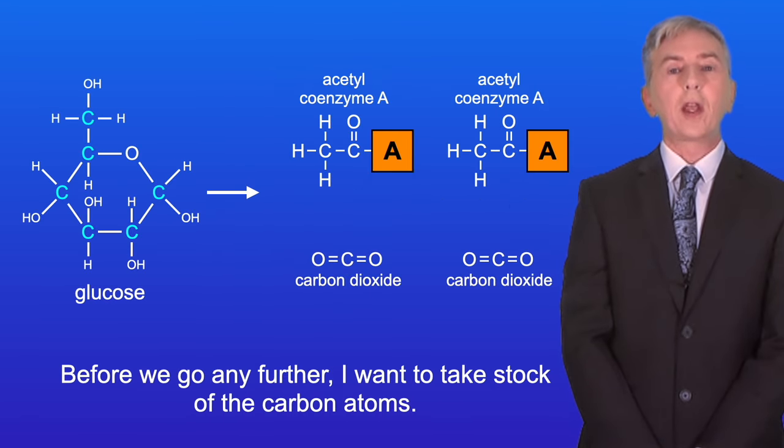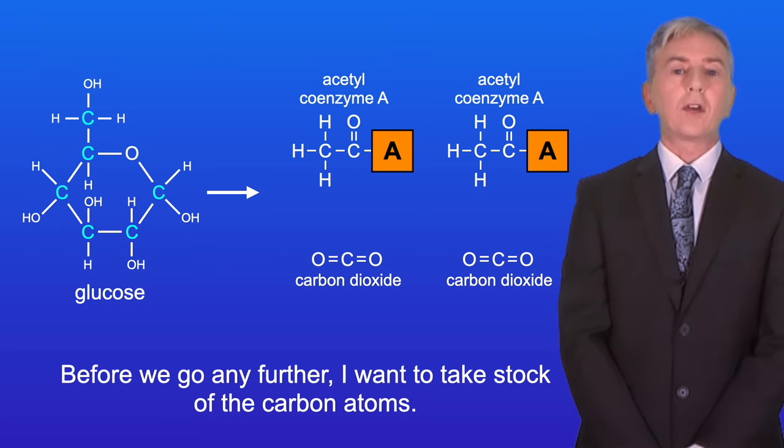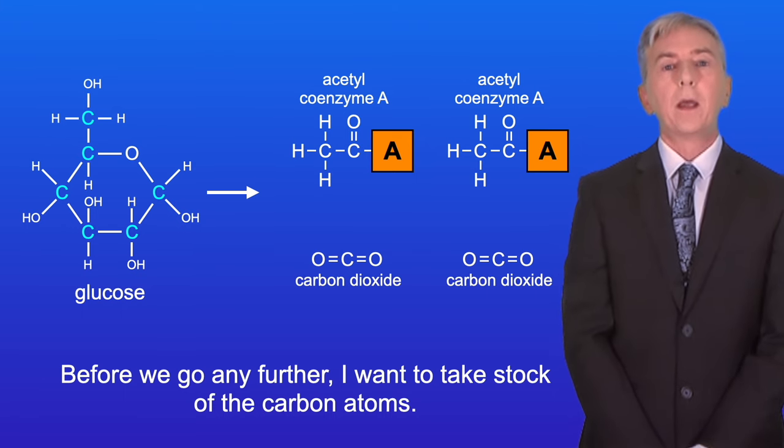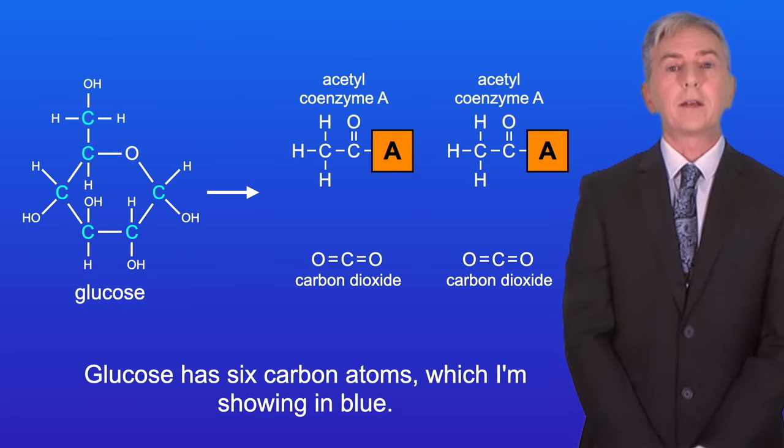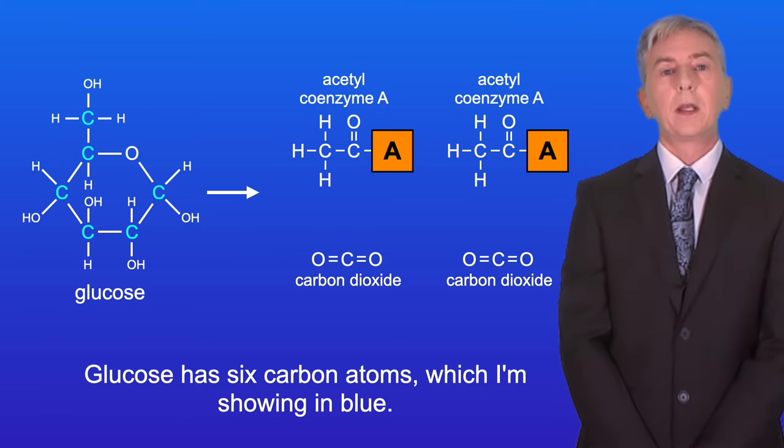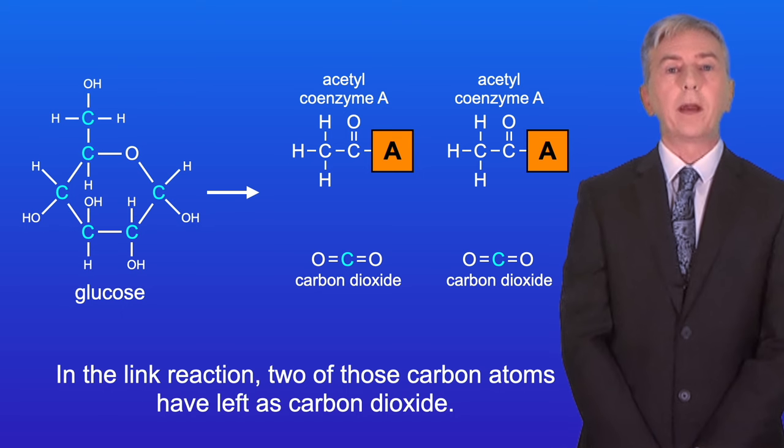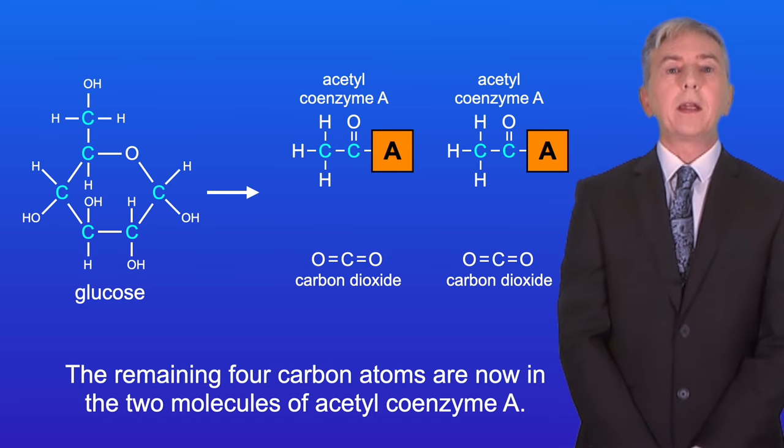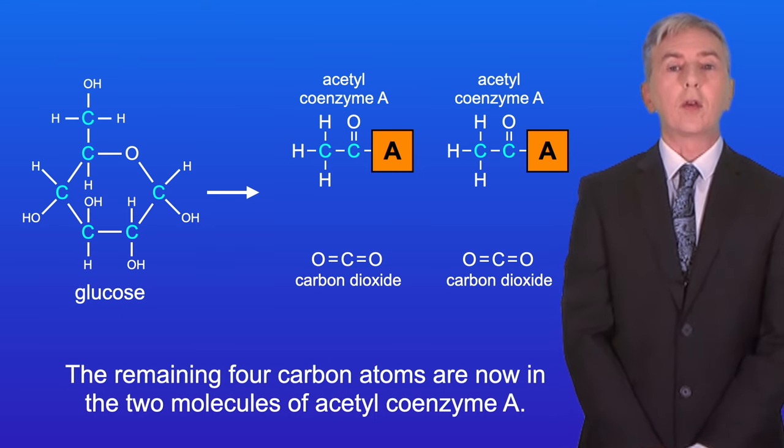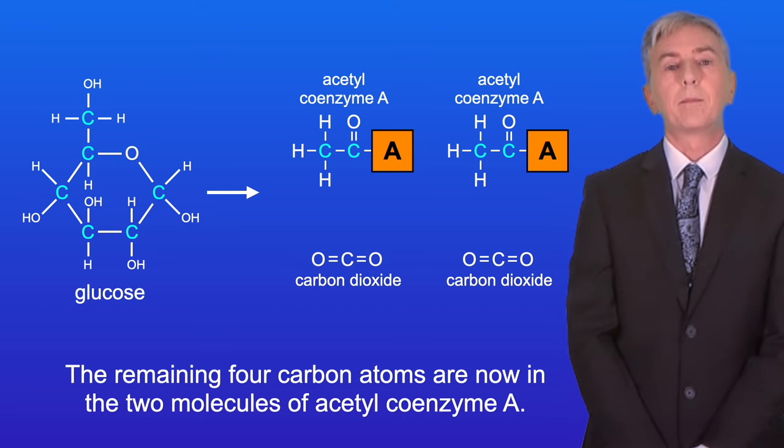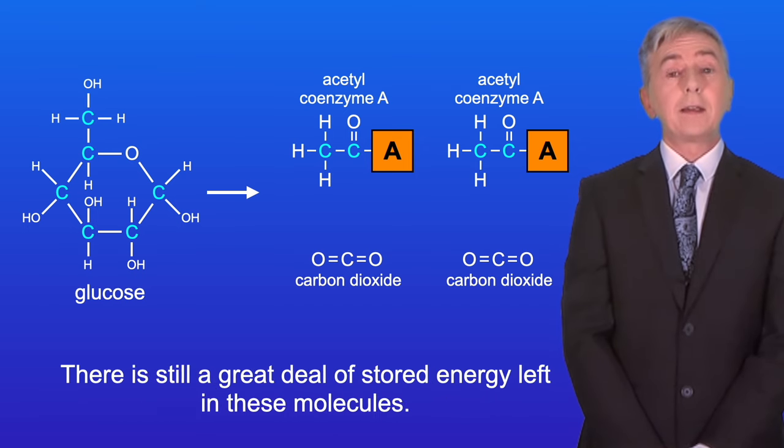Okay now before we go any further I want to take stock of the carbon atoms. Glucose has six carbon atoms which I'm showing in blue. In the link reaction two of those carbon atoms have left as carbon dioxide. The remaining four carbon atoms are now in the two molecules of acetyl coenzyme A. There is still a great deal of stored energy left in these molecules.